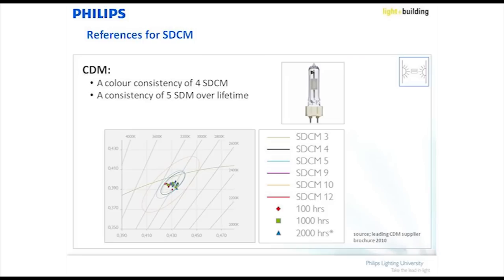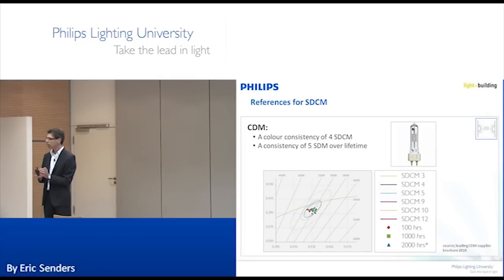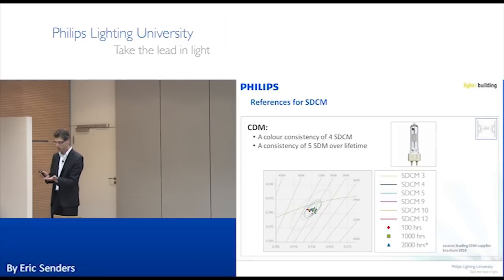Do you specify color consistency in your light sources? Is that important in projects? [Audience: Not really.] Someone asks: how do you get the MacAdam step related back to color temperature? For every color temperature we make, we should have a manufacturing process that gets you to three-step MacAdam.